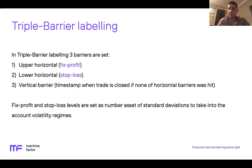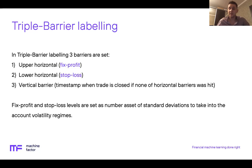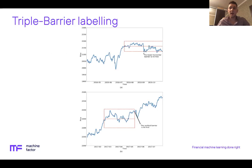Triple barrier labeling can be used in two settings. The first is building a trend model to detect positive and negative trends: if the upper horizontal barrier is hit, the label corresponds to a positive trend; if the lower is hit, it corresponds to a negative trend. If the vertical barrier is hit, we either label the sample as zero — moving to multi-class classification — or use the sign of the price difference between label start and trigger times.